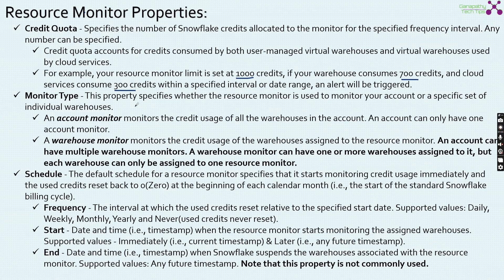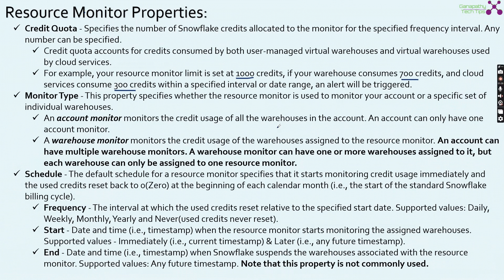Monitor type is the second property. This specifies whether the Resource Monitor is used to monitor your account or a specific set of individual warehouses — you can set it at two levels: account level monitor and warehouse level monitor. An account level monitor monitors the credit usage of all warehouses in your account, and an account can have only one account level monitor. A warehouse monitor monitors the credit usage of the warehouses assigned to the resource monitor, and an account can have multiple warehouse monitors. A warehouse monitor can have one or more warehouses assigned to it, but each warehouse can only be assigned to one resource monitor.